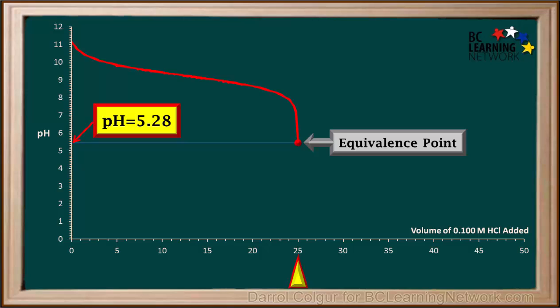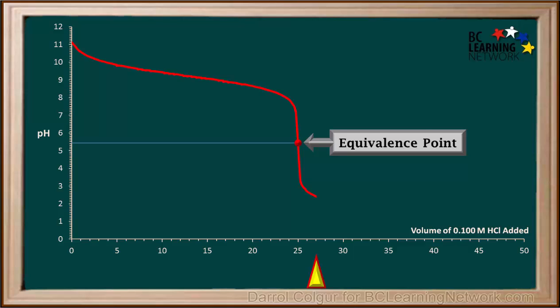Now we'll add more HCl to the solution and go past the equivalence point. As we add HCl, the pH rapidly drops until about 27 milliliters is added, where it starts to level off a bit. As we keep on adding HCl until the volume added is 50 milliliters, the pH shows a very gradual decrease.